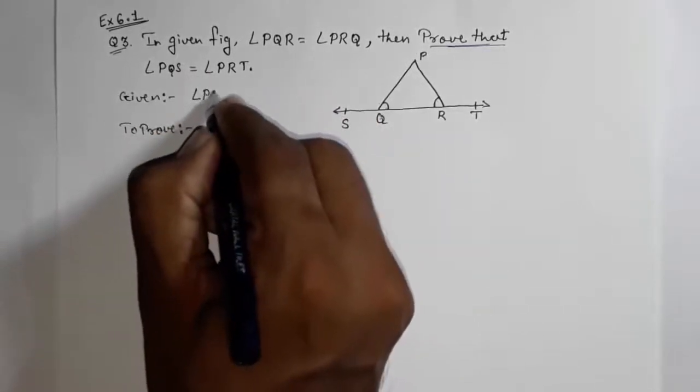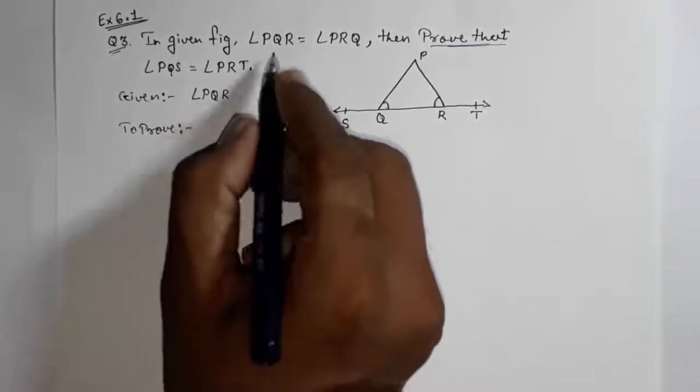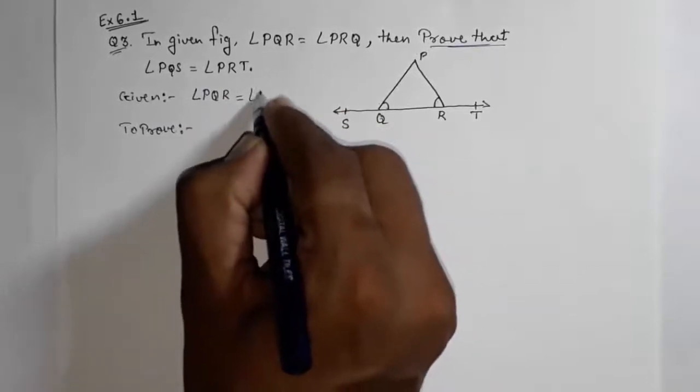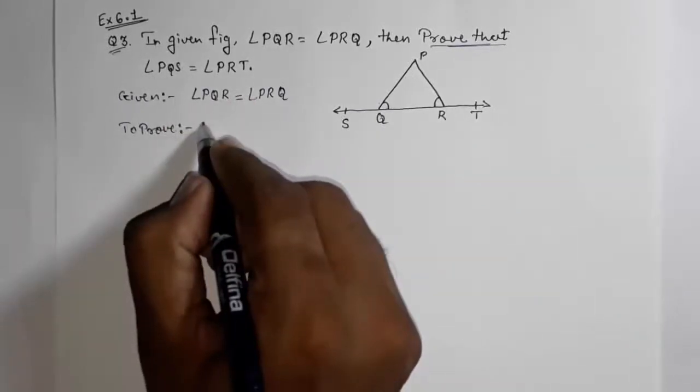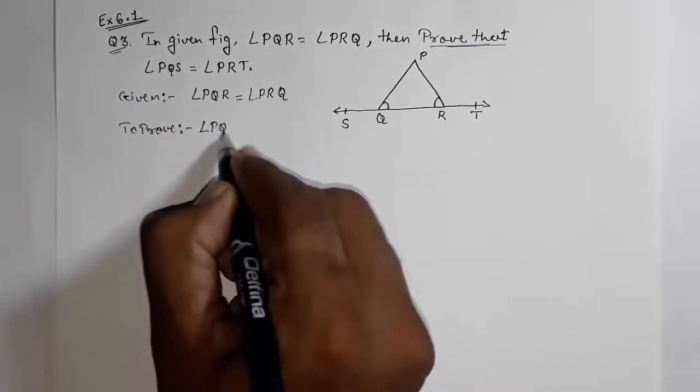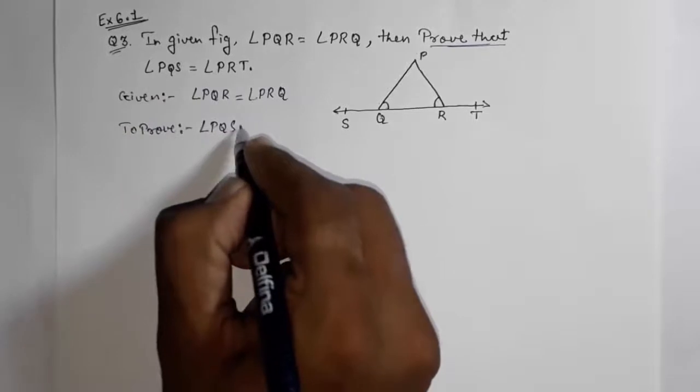Here they had given angle PQR is equal to angle PRQ. We will get a hint from the given, and then we can prove what they told us to prove. That's why 'To Prove' is angle PQS is equal to angle PRT.